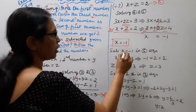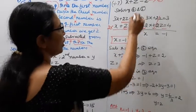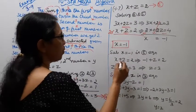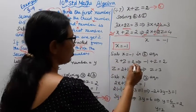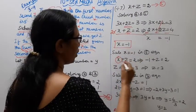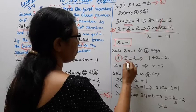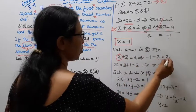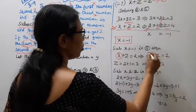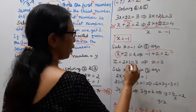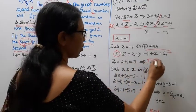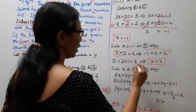Substituting x = -1 into equation 5: x + z = 2, so -1 + z = 2, therefore z = 2 + 1 = 3. So z = 3.